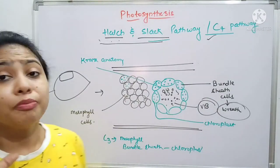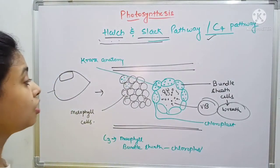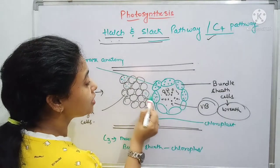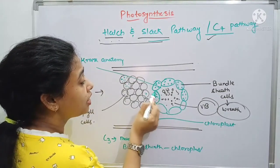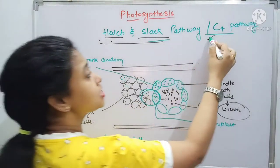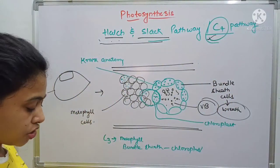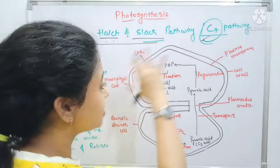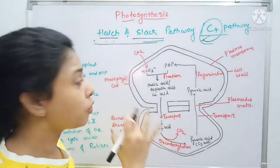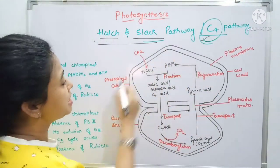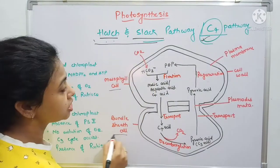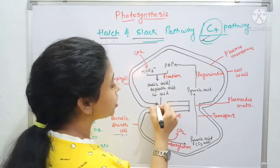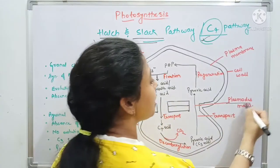How does this anatomy perform the C4 cycle? This mesophyll cell and this bundle sheath cell have a connection between these two, and they combinedly perform this C4 cycle. In the C4 pathway, here is the mesophyll cell and this is the bundle sheath cell. As I told you, they both are connected through a channel structure which is called the plasmodesmata.